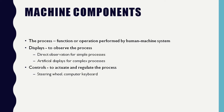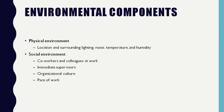Now we go to the environmental component, which can be discretized into physical environment and social environment. The physical environment includes the immediate area of the human-machine system. Its components usually include location and surroundings — lighting, noise, temperature, and humidity. These environmental factors can affect the performance of a human-machine system and are of interest to the ergonomist.